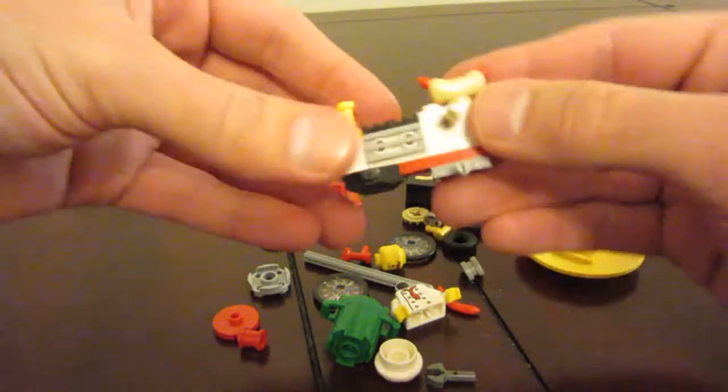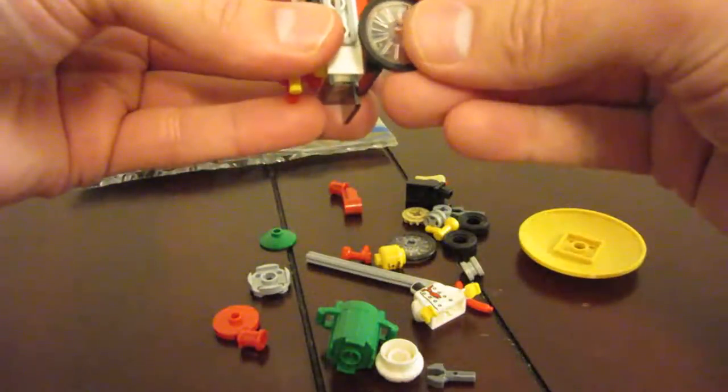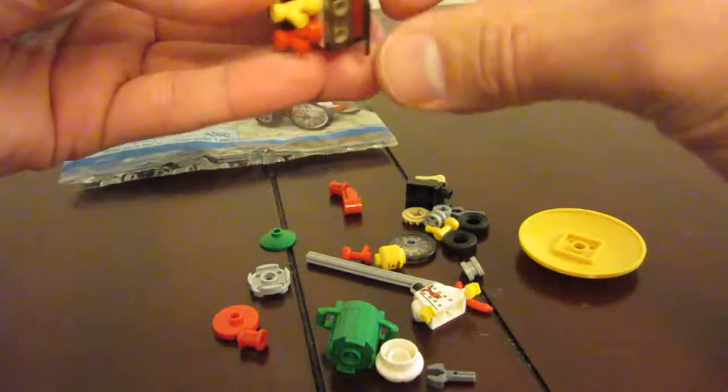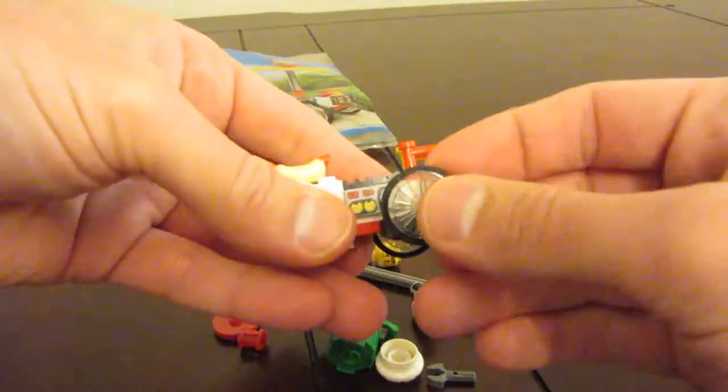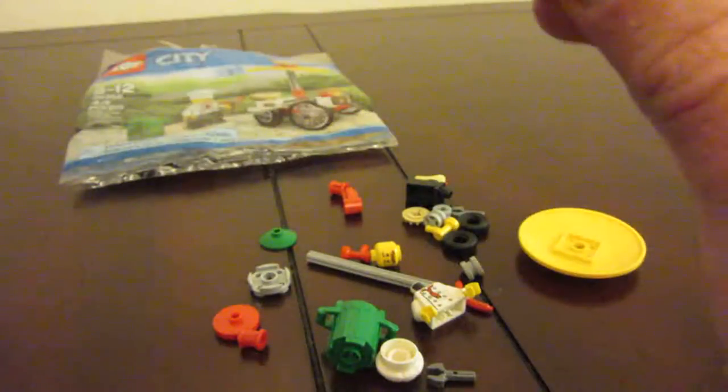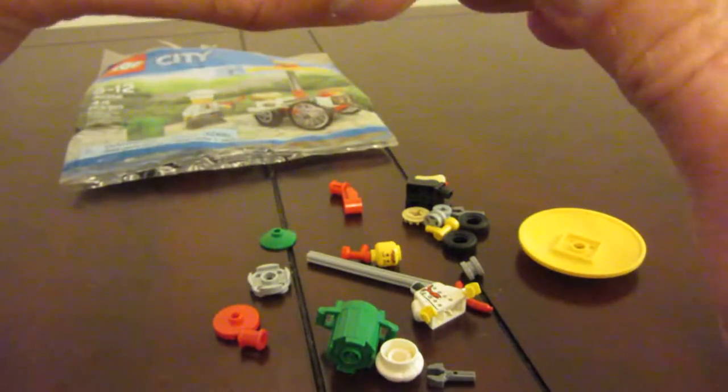Flipping it over. Then you've got your two wheels. So you've got the big wheels on the back. These bicycle looking wheels go on the back.